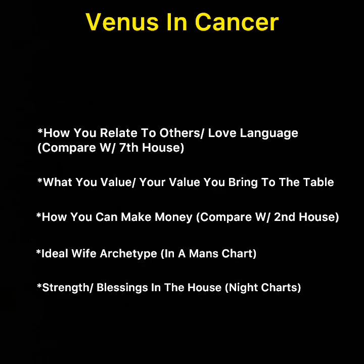If you have a nighttime chart, look at the house that Venus is in — it can show where you have blessings. Also look at the signs wherever Libra and Taurus are, which is what Venus rules over. Look at the houses of those signs, as those are possible other areas where you can have strengths and blessings, depending on other things which I talk about in that video.